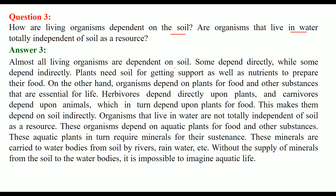All living organisms depend on soil — some directly, some indirectly. Plants need soil for support, growth, and nutrients to prepare their food. Organisms depend on plants for food and other plant products. Herbivores depend directly on plants; carnivores eat herbivores, so they are also dependent on plants, which makes them dependent on soil indirectly.